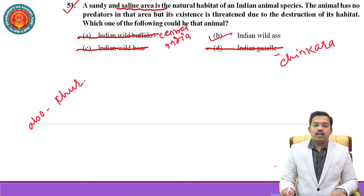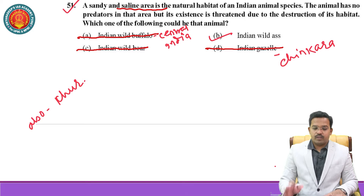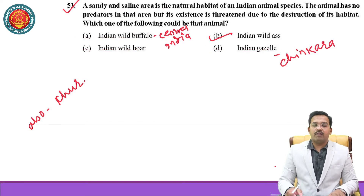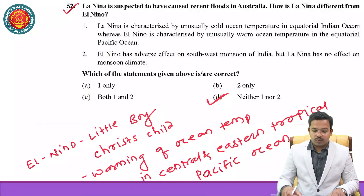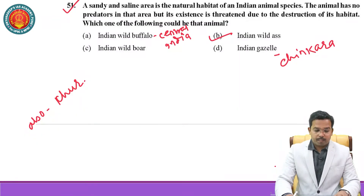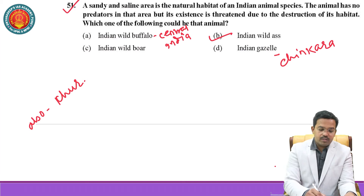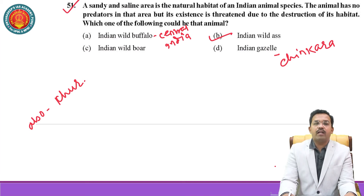The most important option is Indian wild ass, and on this animal you can find many questions in previous years' papers as well. The correct option is Indian wild ass, found in Kutch, Kathiawad region, and the Rann of Kutch — the most important region where this animal is found. This Indian wild ass is also known as Khoor, which is an alternative name for Indian wild ass.